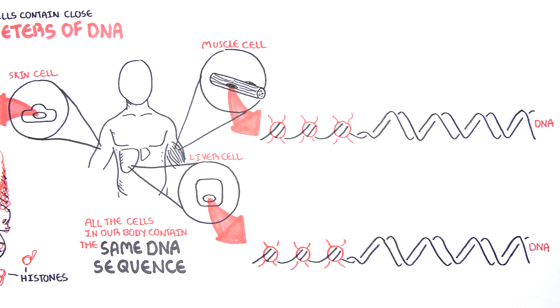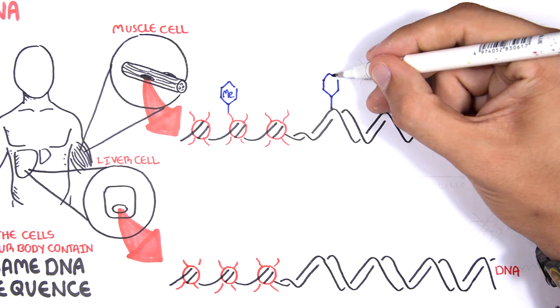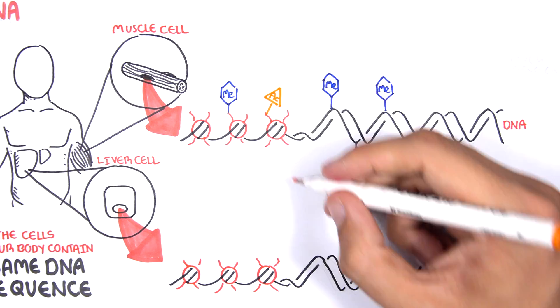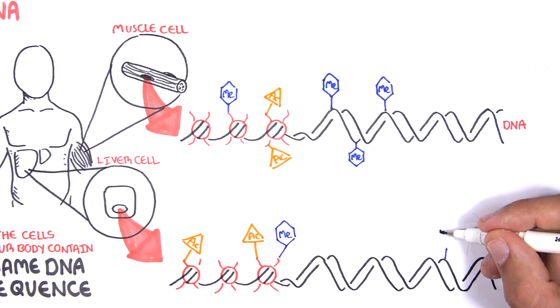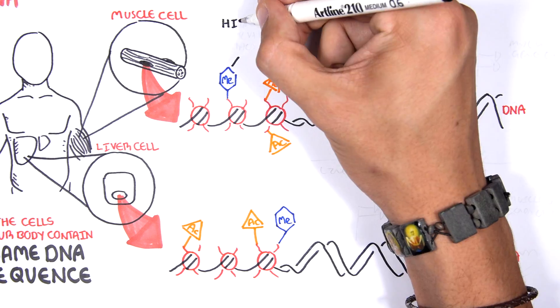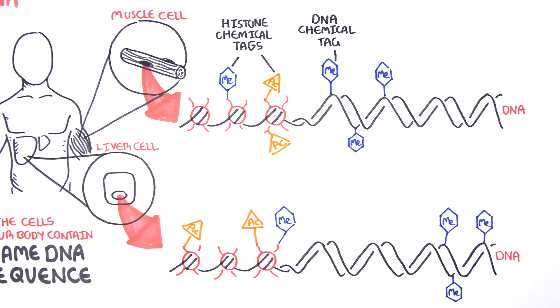Within each cell, the DNA and also the histones can be tagged by tiny chemicals that modify gene expression. These chemical tags cause some genes to be turned on and some genes turned off.